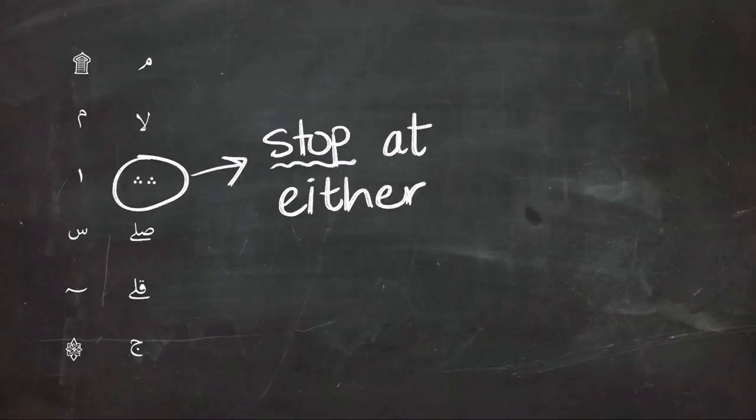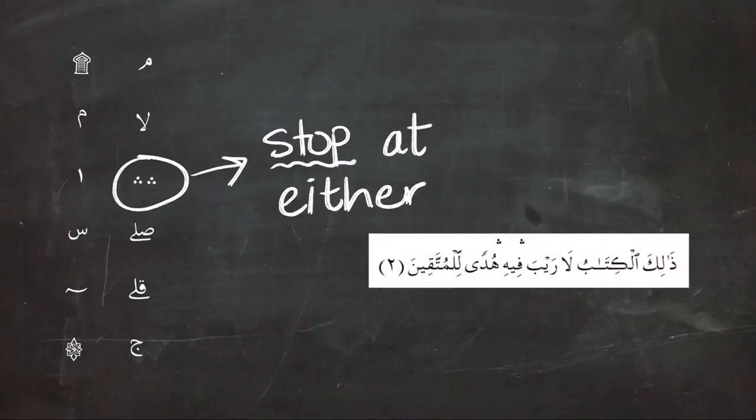The three dotted symbol means you can't stop at either of them, but you have to stop at one and not the other. So in the second ayah of Surah Al-Baqarah, you are allowed to stop at the first one by reading, or by stopping at the second one.